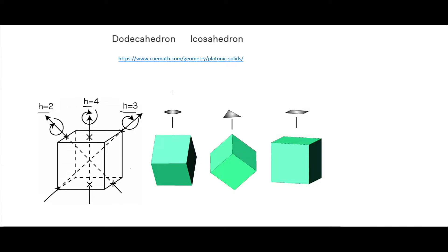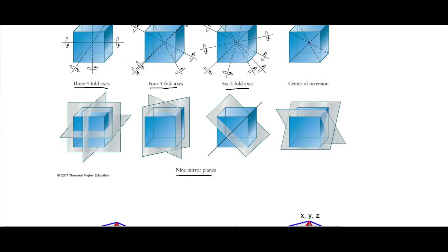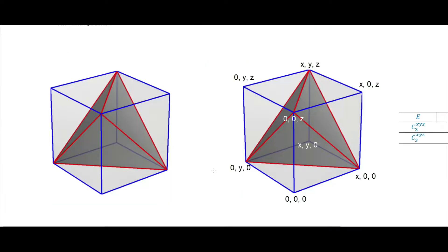The twofold symmetry of the cube has an axis going in and out of opposite edge midpoints. The threefold symmetry has the axis going through opposite corners. The fourfold symmetry has an axis going into the top and coming out the bottom — you can rotate it four times at 90 degrees each time. So we end up with three fourfold axes, four threefold axes, six twofold axes, and nine mirror planes.